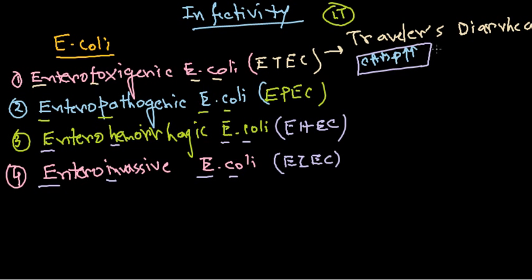ETEC produces a heat labile toxin, called LT. This heat labile toxin binds with the receptor continuously, so the signal stays on and cyclic AMP concentration keeps going up. As a result, water and chlorine ions are released into the gut, the cells become dehydrated, and the gut becomes extremely fluid. This type of disease is related to poor hygiene and is mostly seen in developing countries with poor sanitation.